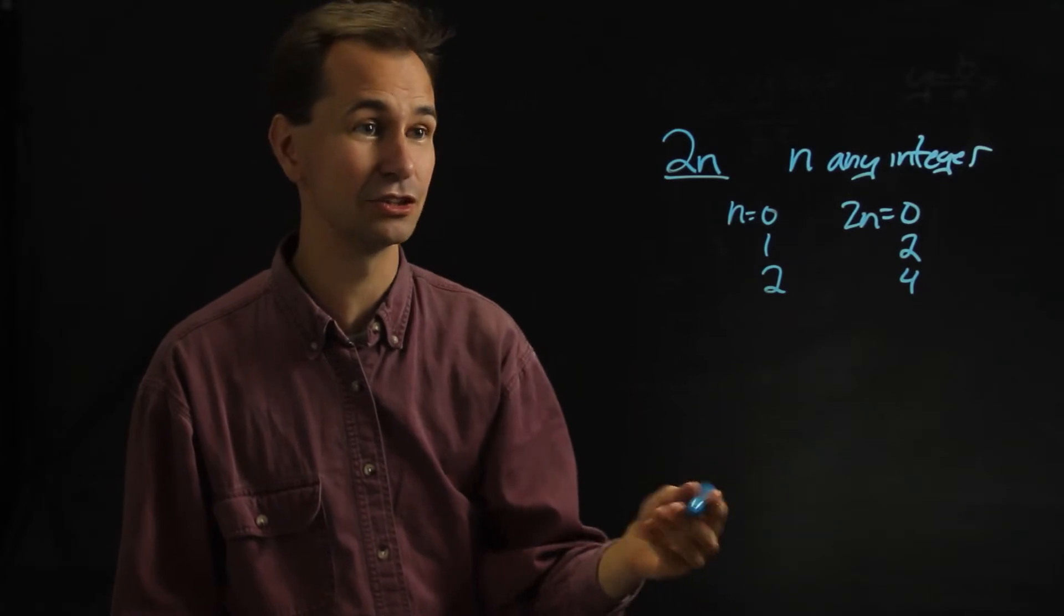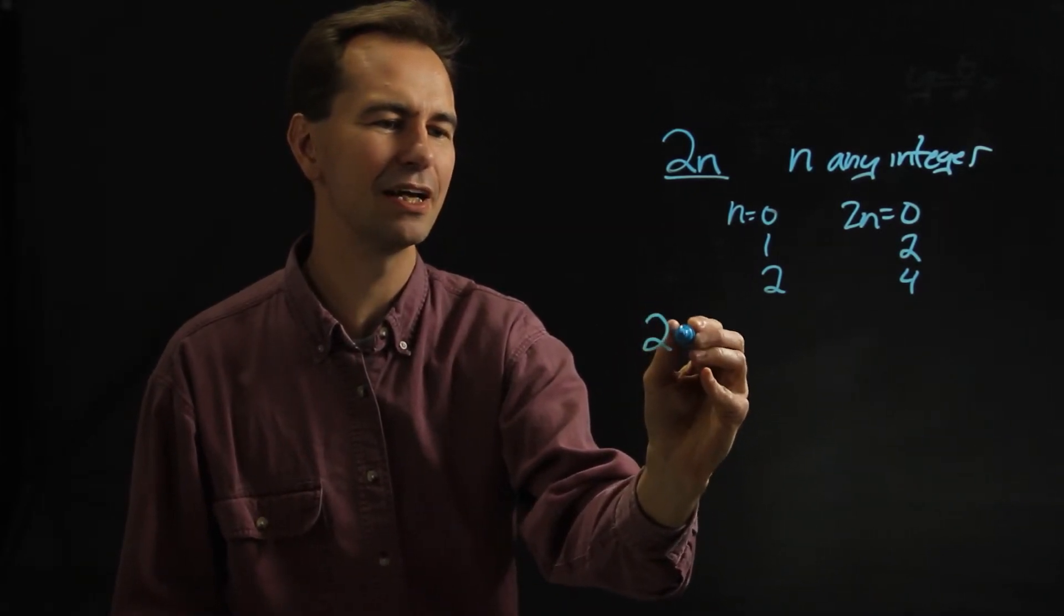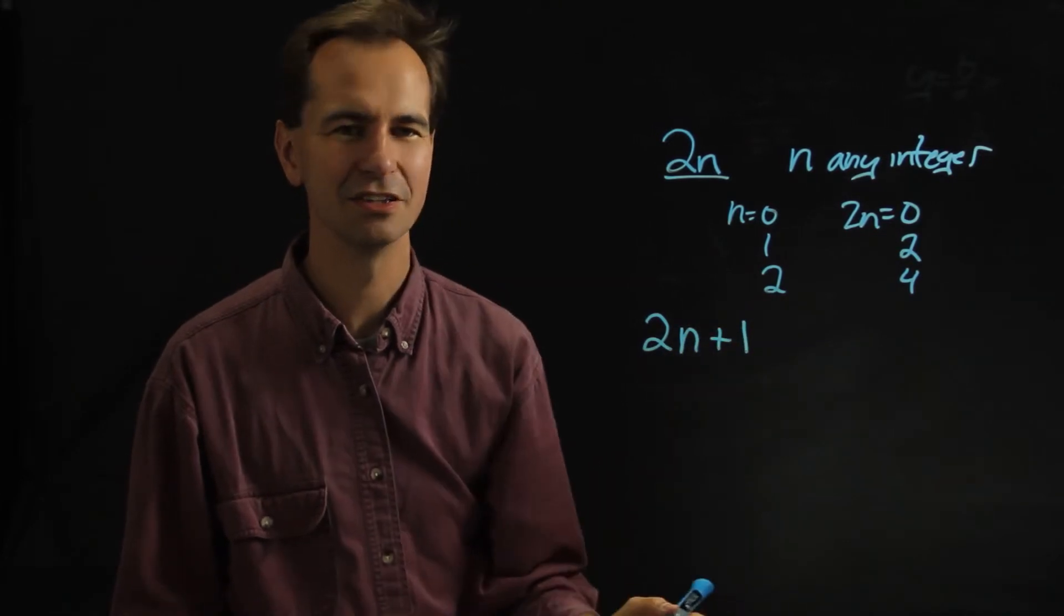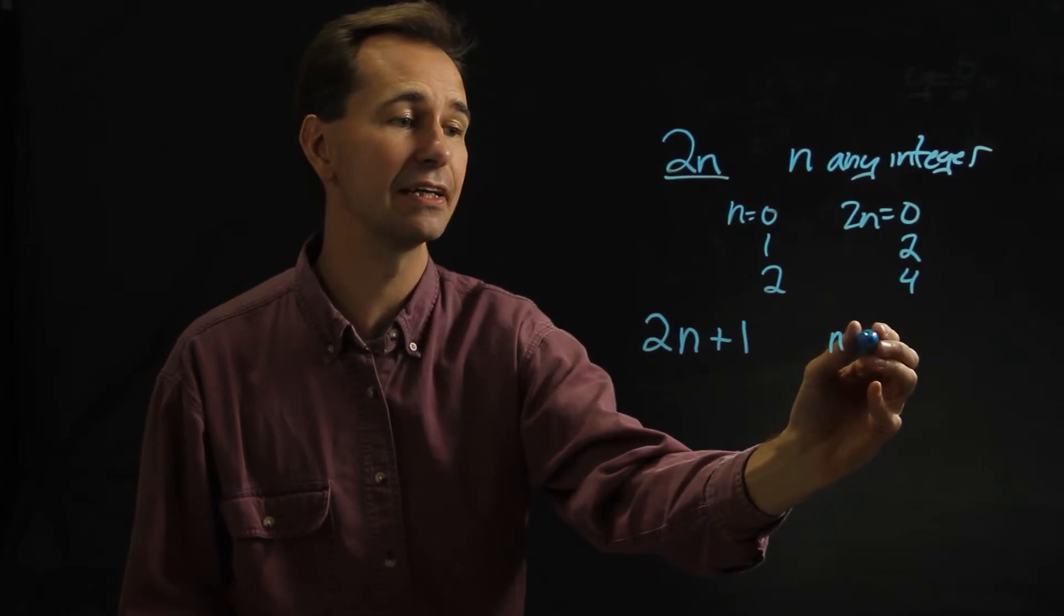So to do an odd integer you do something pretty similar. Instead of 2n, you actually do 2n plus 1. So it's really slick. And again you say n is any integer.